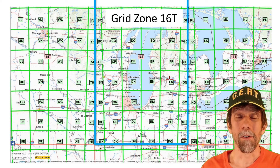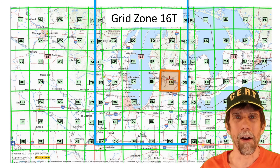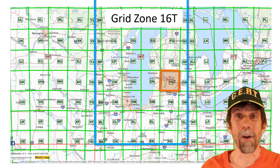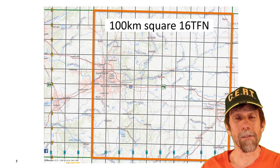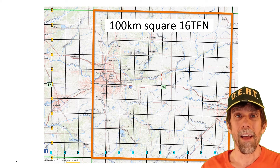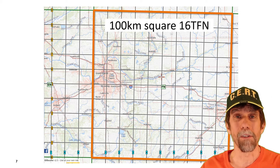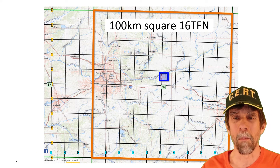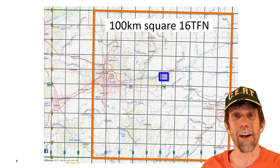Here's a view of grid zone 16 Tango that is further subdivided into 100-kilometer squares, and we're going to focus on 100-kilometer square Foxtrot November. If we look in Foxtrot November, you can see the crosshairs — they're partly covered up by the FN label. We're now going to zoom in to that 100-kilometer square and take a closer look. Here is the 100-kilometer square we would identify as 16 Tango Foxtrot November, and the area inside the blue rectangle is what's covered by the example map I'm going to use for this presentation.